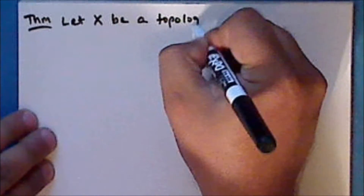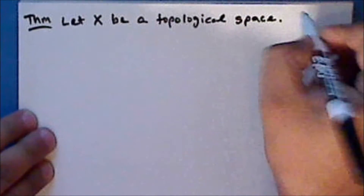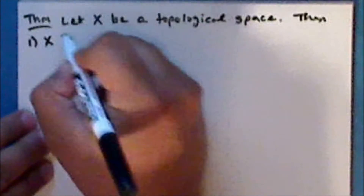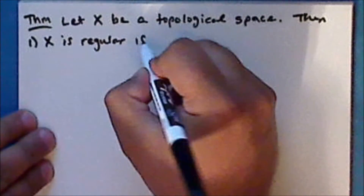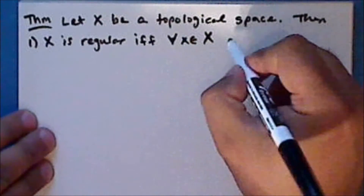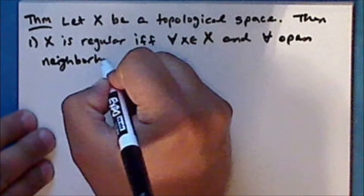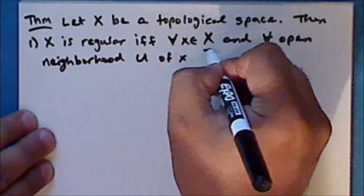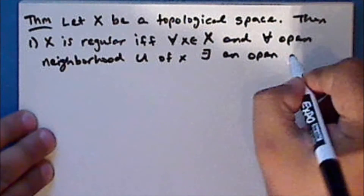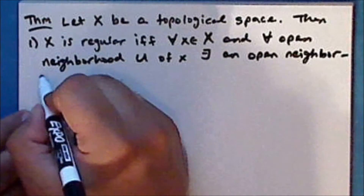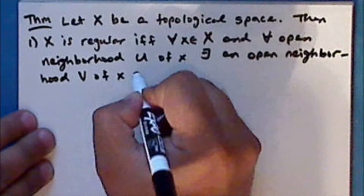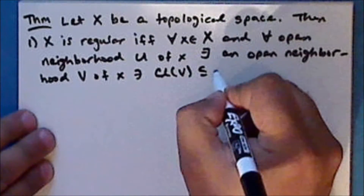We will begin with some additional facts about regular and normal spaces, starting with a theorem. Let X be a topological space. The space X is regular if and only if for every point x in the space and for every open neighborhood U of the point x, there exists an open neighborhood V of the point x,